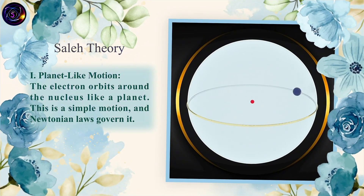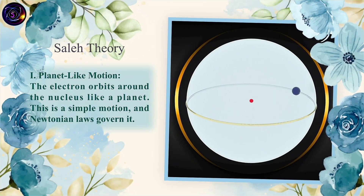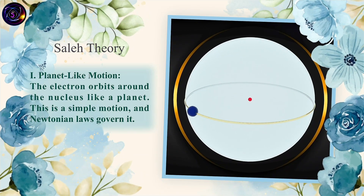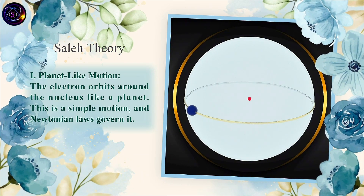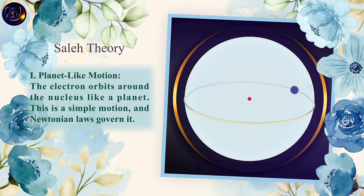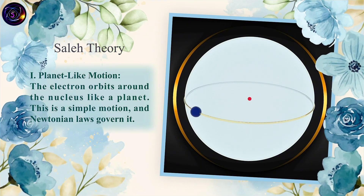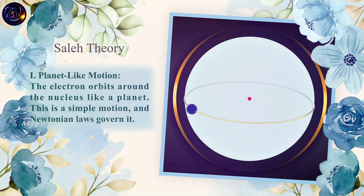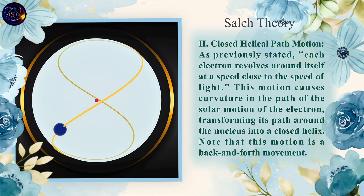1. Planet-like motion: The electron orbits around the nucleus like a planet. This is a simple motion and Newtonian laws govern it.